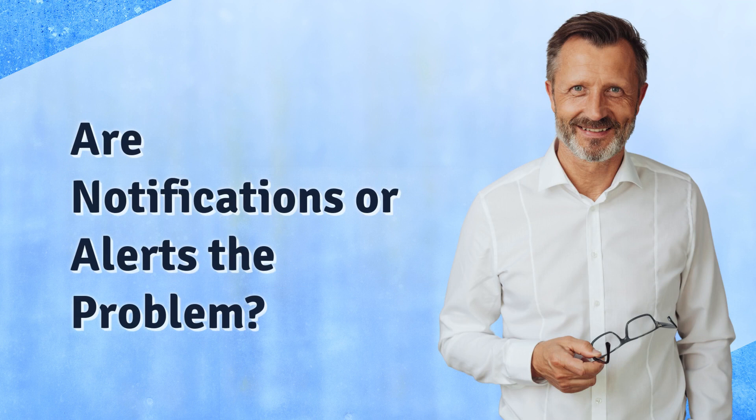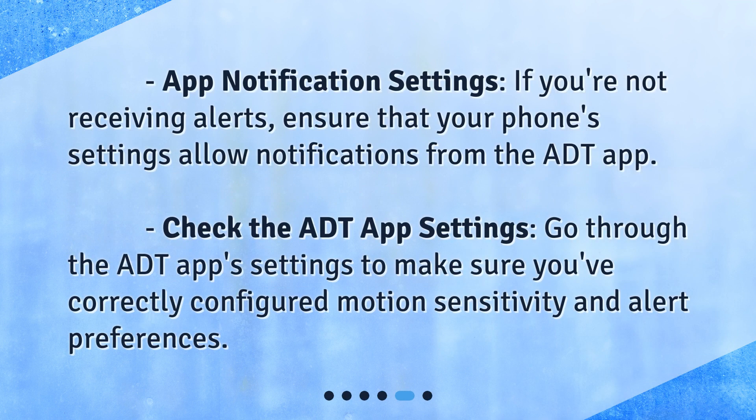Are notifications or alerts the problem? App notification settings — if you're not receiving alerts, ensure that your phone's settings allow notifications from the ADT app. Check the ADT app settings and make sure you've correctly configured motion sensitivity and alert preferences.